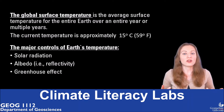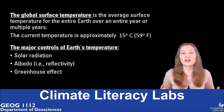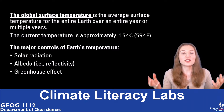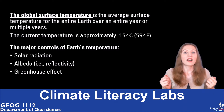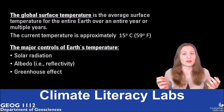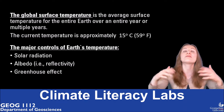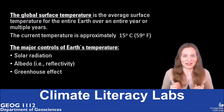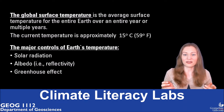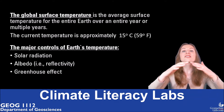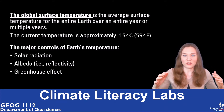The major controls of Earth's surface temperature are: solar radiation, or how much energy we get from the sun; albedo, or Earth's reflectivity, which controls how much energy is reflected back to space; and the greenhouse effect, which controls how much of Earth's heat is trapped in the atmosphere.